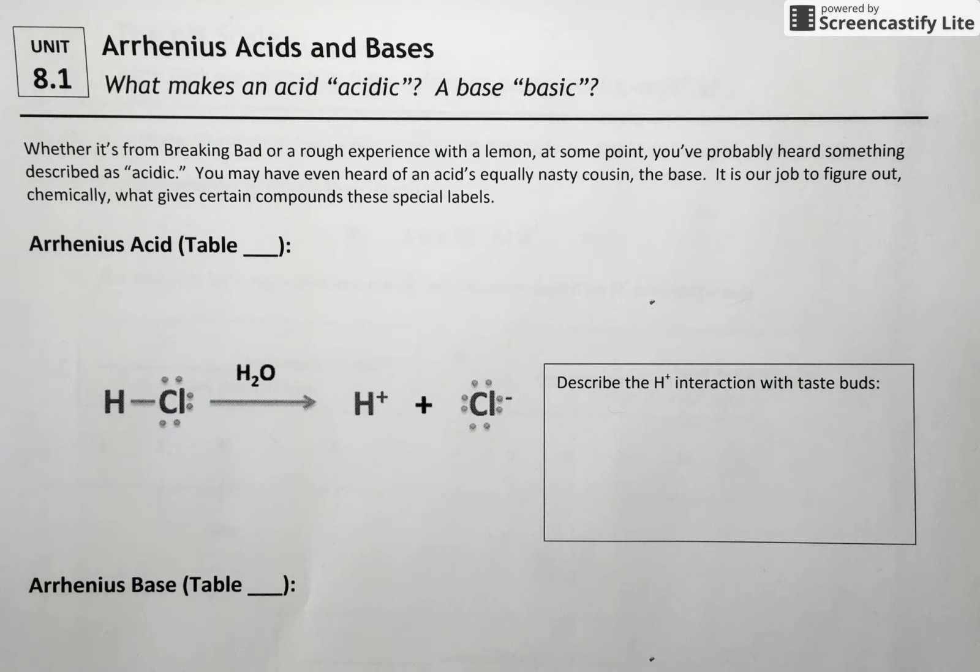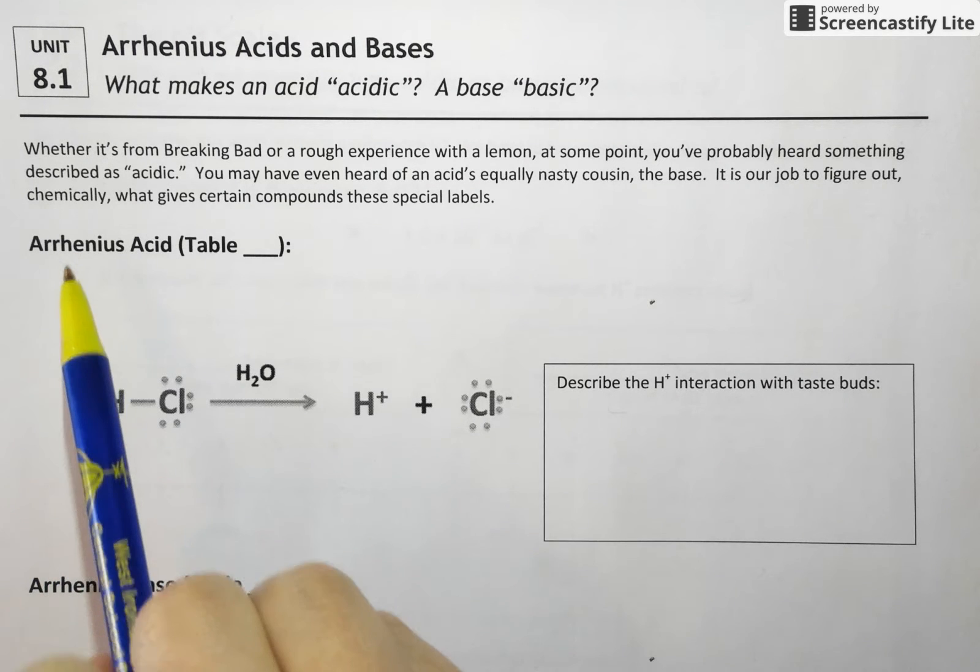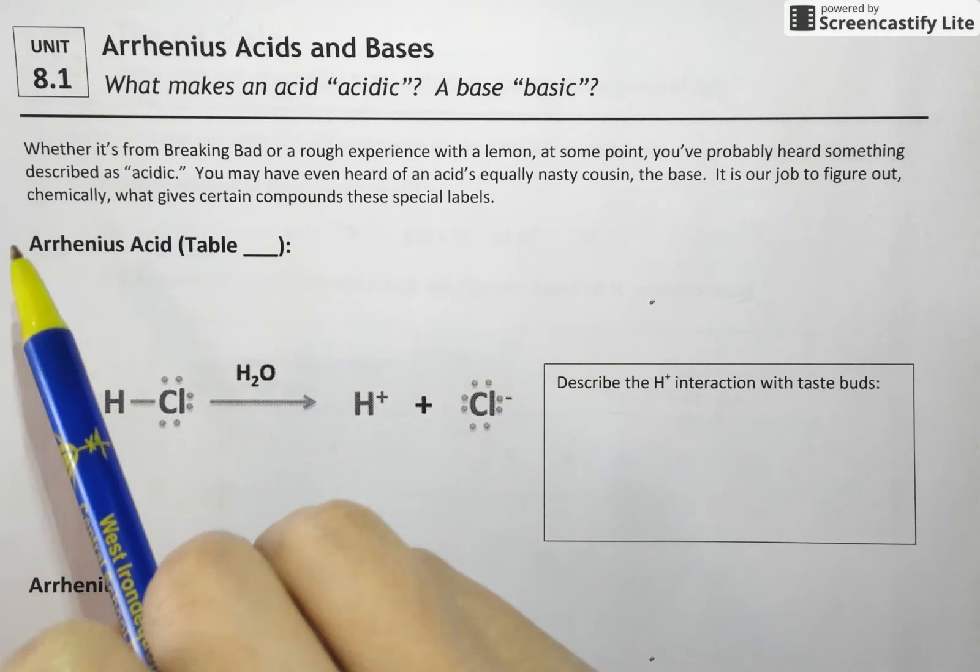So in Regents Chemistry you're going to see references of course to acids and bases, but often time you're going to see this guy's name out in front of the term acid or base, and that's Arrhenius.